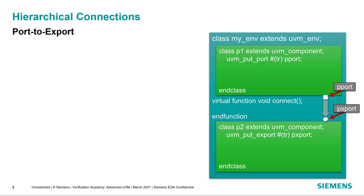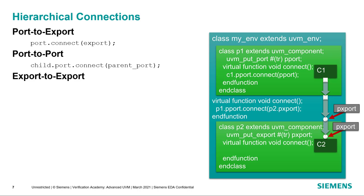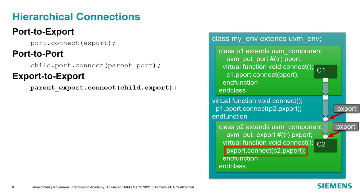We can make connections hierarchically in UVM as well. At the highest level, we connect the port to the export — in the environment, we connect the port of P1 to the export of P2. If P1 has a child connection, that child port needs to connect to the parent port, so we say child port dot connect to parent port. Similarly on the target side, we connect the parent export down to the child export. All connections start from the originating port all the way down to the target export that supplies the implementation.